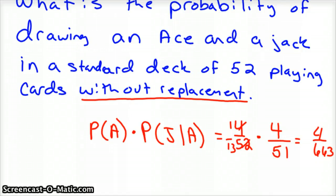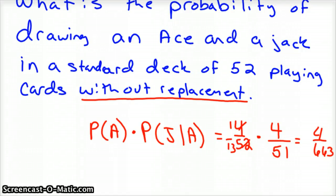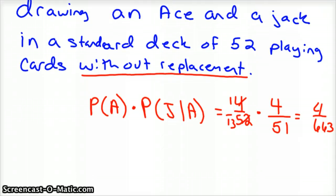Now, good job if you got that far. But, the way my problem is worded, it didn't matter whether you got the ace first or the jack first. I just wanted to know, what's the probability of getting an ace and a jack? So we could have gotten the jack first. So we need to look at that situation. We have two situations. Situation 1 is the one we just solved.